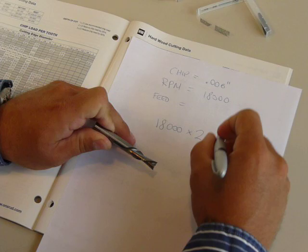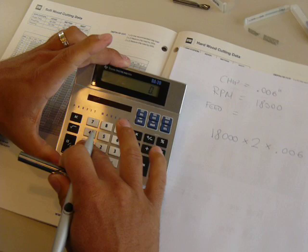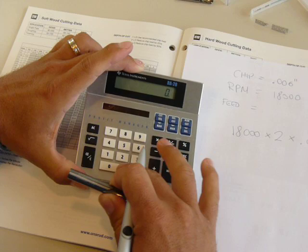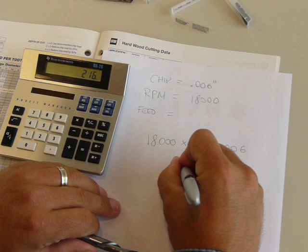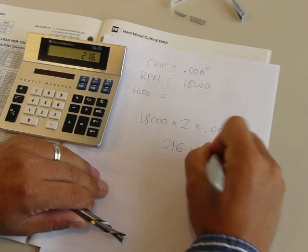If we do this, we have 18,000 RPM times 2 and times 0.006. Now, that equals 216. Therefore, your feed rate would be 216 inches per minute for this particular tool.